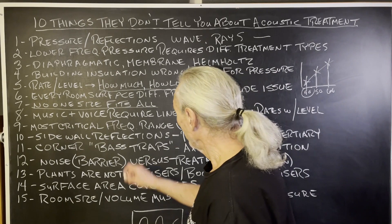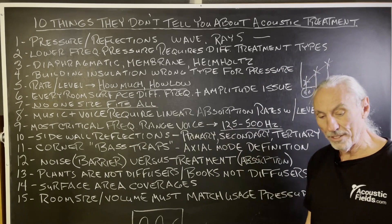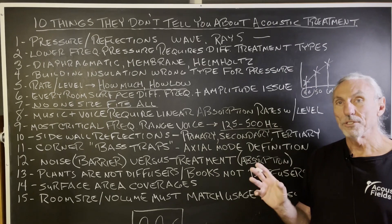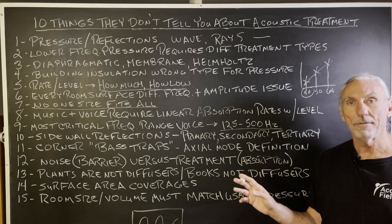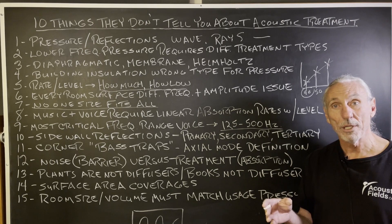The most critical frequency range for voice is 125 to 500 Hz — they don't tell you this at all. This is the most critical range for music and voice. Any mix engineer will tell you: 125 to 500 for voice is critical. You have to keep that frequency response in mind when dealing with voice in theater, home theater, recording studios, and vocal rooms.